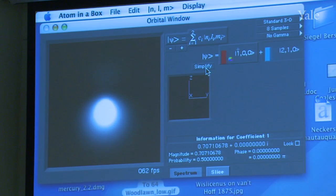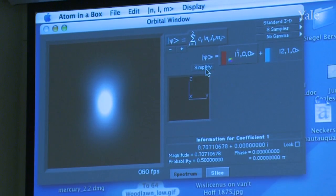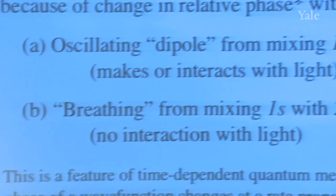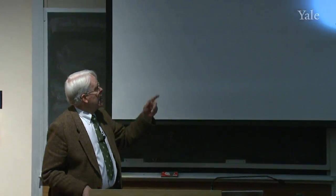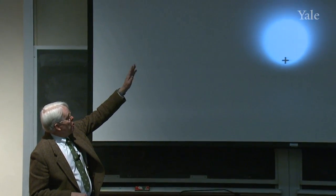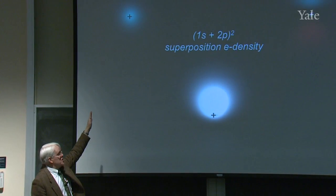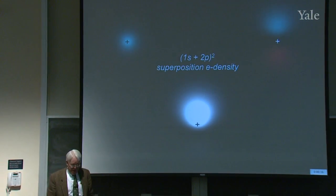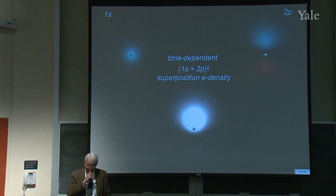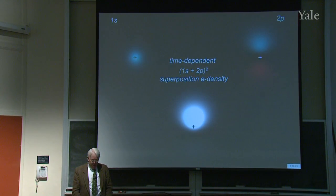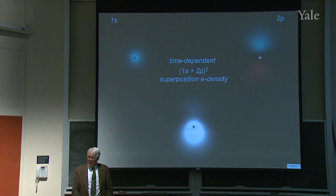You can also do breathing by mixing 1s with 2s, but that doesn't interact with light because it doesn't generate a dipole. For mixing 1s and 2p: the 2p orbital has both up and down components with opposite phases, while 1s is a single phase. If you add the two, it reinforces above. But if you make it time-dependent, then what happens in time is that it goes up and down.